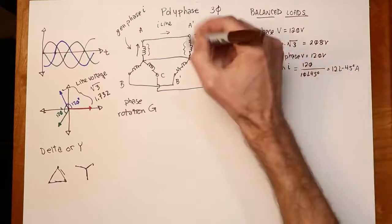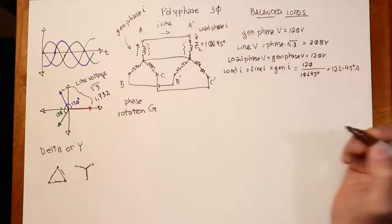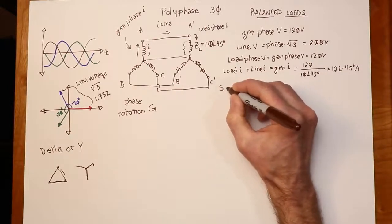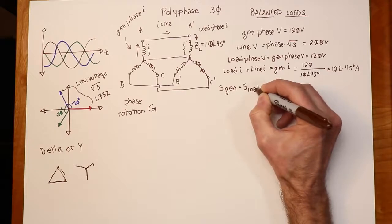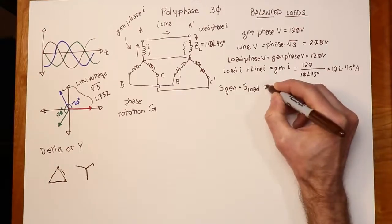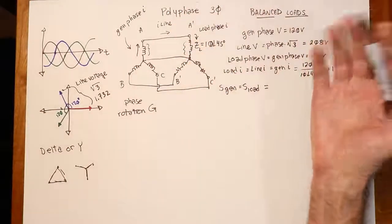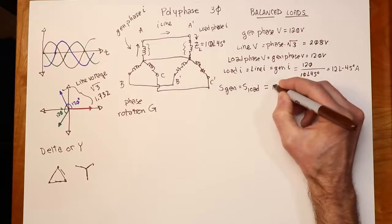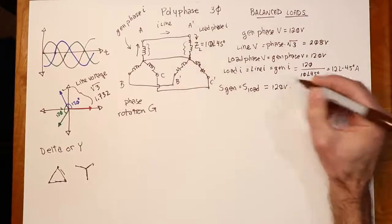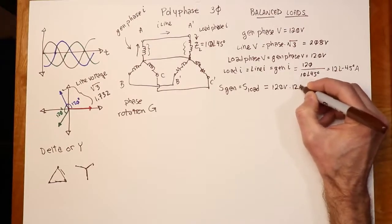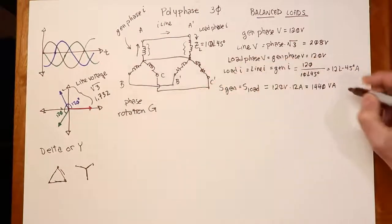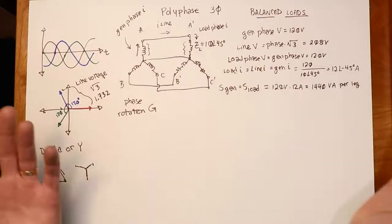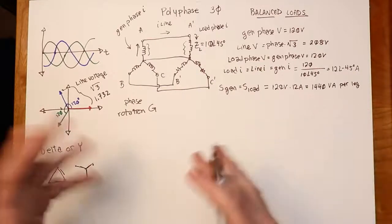From the current we can figure out the apparent power. It's always worth remembering that the apparent power from the generator equals the apparent power in the load. Apparent power — not true power — is the applied voltage times the current: 120 volts multiplied by 12 amps gives 1440 volt-amps. That's per leg, so the total apparent power in the system is three times that.